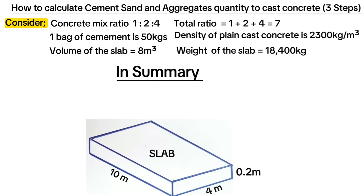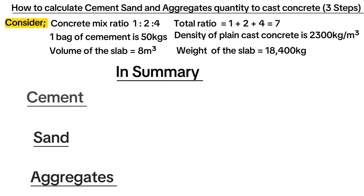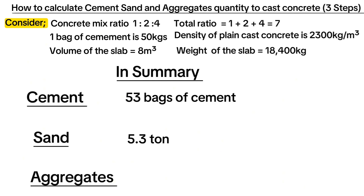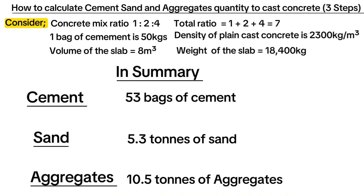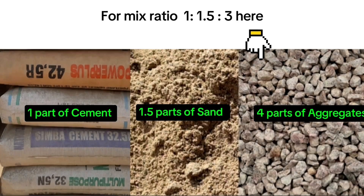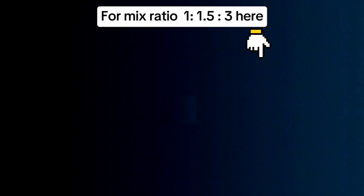In summary, when casting concrete for a slab that is 10 meters along the length, 4 meters along the width, and 200 millimeters slab depth, with a concrete mix ratio of 1:2:4, you purchase 53 bags of cement, 5.3 tons of sand, and 10.5 tons of aggregates. The above calculation covers the exact values — you will need to add 5 to 10 percent allowance for wastage. That's all about finding out the quantity of materials required to cast concrete. Click on this video for another example with a different mix ratio.